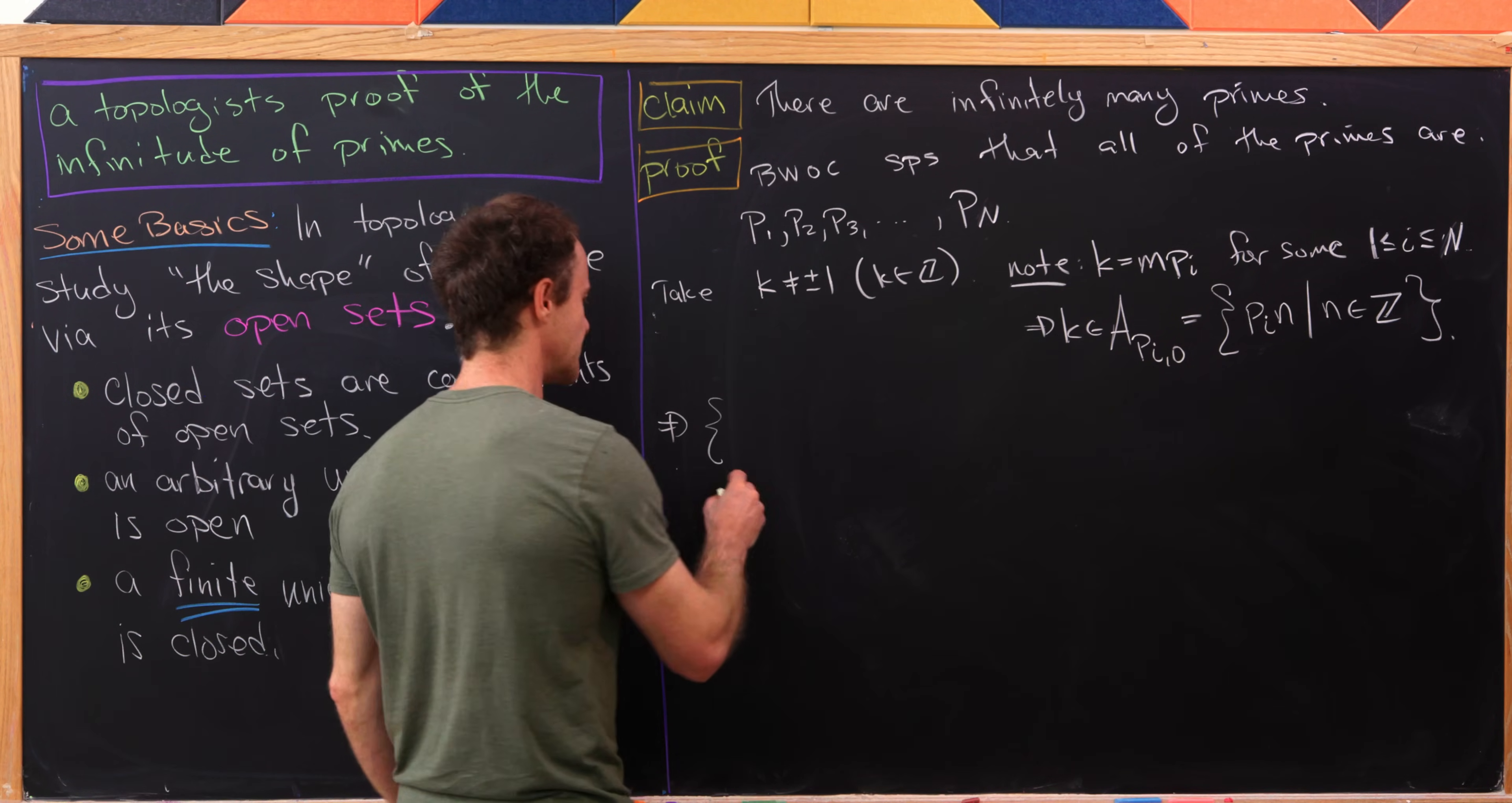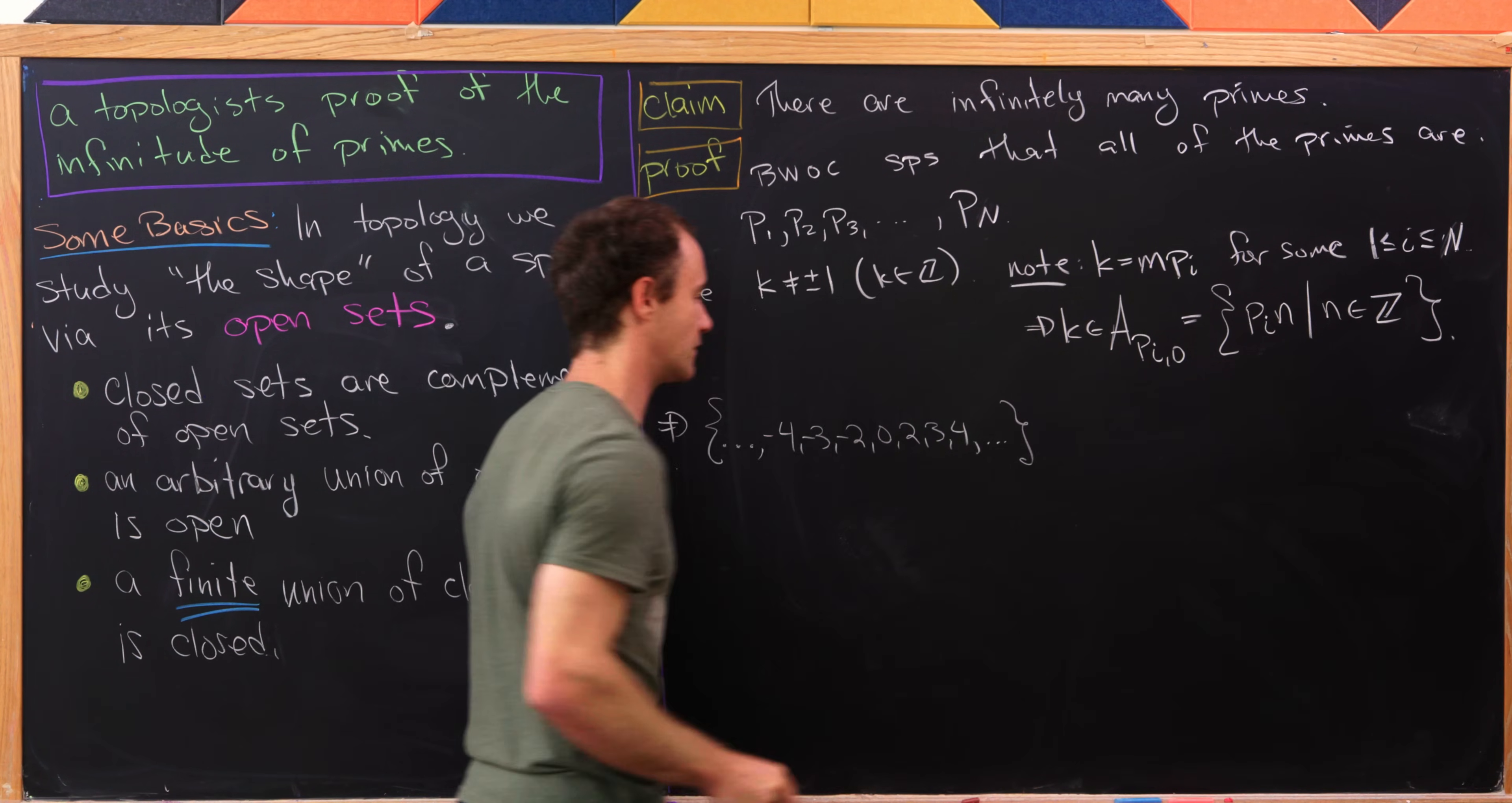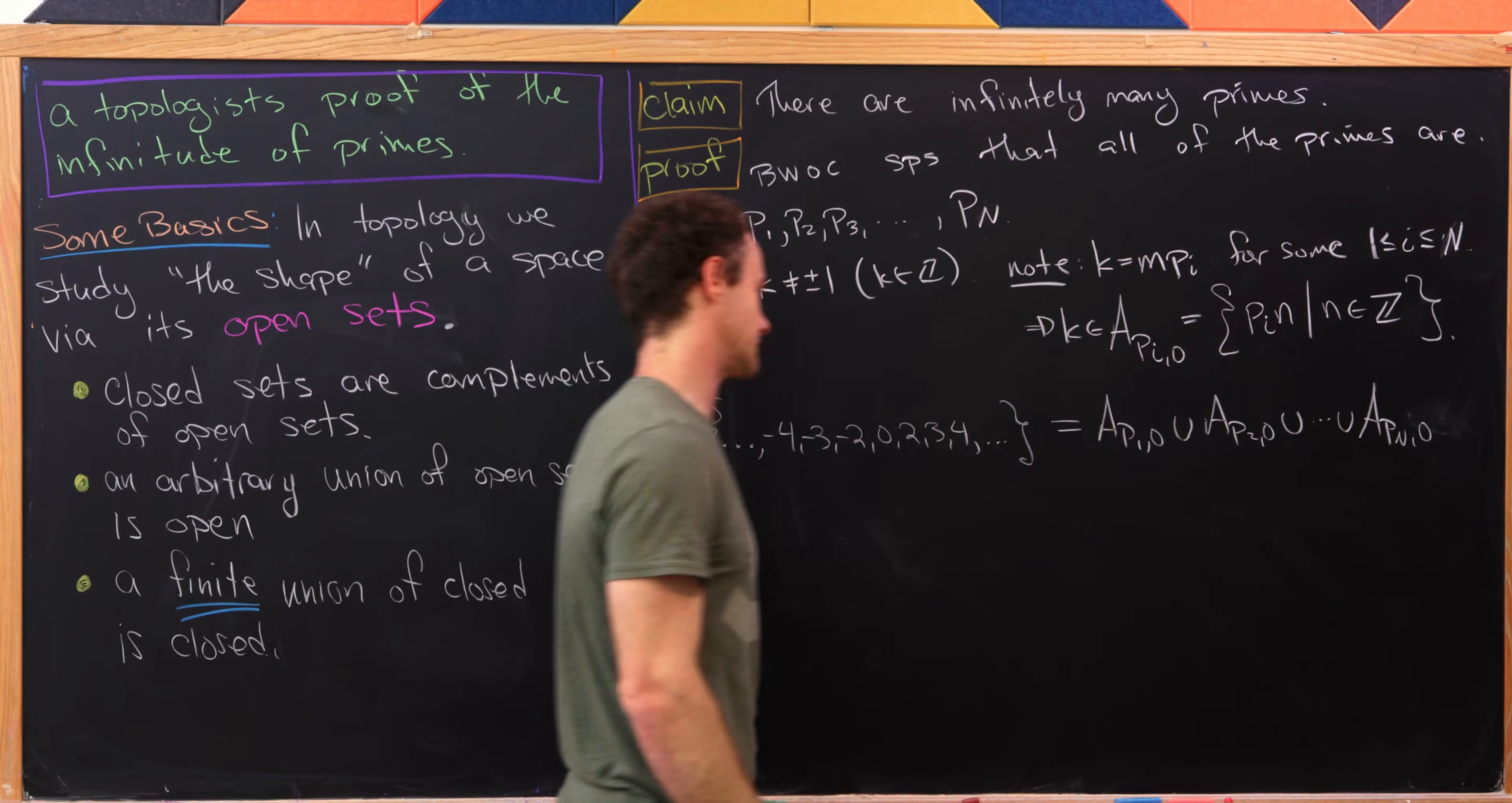Okay, so let's write that down. So let's write down, well, I'm going to write down all of the integers except for plus or minus one. So I've got minus four, minus three, minus two, zero, two, three, four, so on and so forth. And then that is going to be equal to A p1, 0 union A p2, 0 ending at A p capital N, 0.